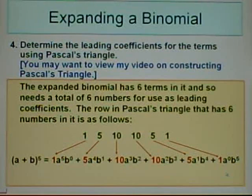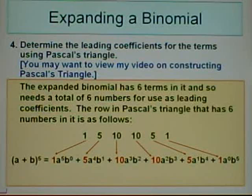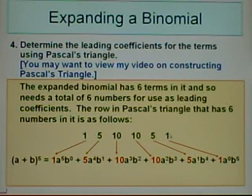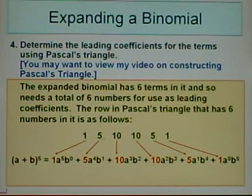Step 4: Determine the leading coefficients for the terms using Pascal's triangle. If you're not familiar with Pascal's triangle, you may want to view my video on constructing it — it's fairly straightforward and easy. The expanded binomial has 6 terms and so needs 6 numbers for use as leading coefficients. The row in Pascal's triangle that has 6 numbers is: 1, 5, 10, 10, 5, 1. In order, each one is assigned to a term, so the first term gets 1, the second gets 5, the third gets 10, and so on.